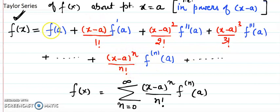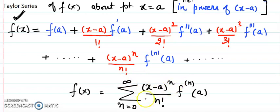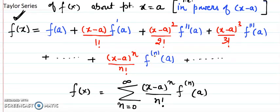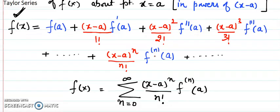We can write this whole series in summation form, where n goes from 0 to infinity. When you place n equals 0, 1, 2, 3, and so on, we get all the terms. This is one way to write a Taylor series, and in problem solving we use this format.